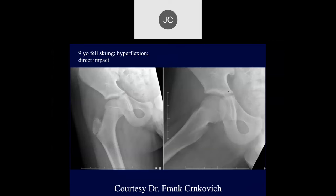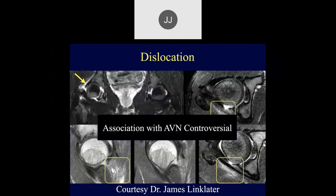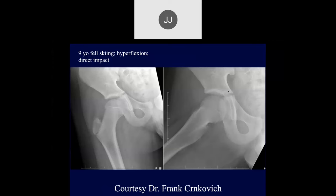I reduced probably between 10 and 15 of these, which is a pretty high number for one orthopod, and I've never seen a case of AVN — but that's anecdotal. AVN does occur, but not very commonly.